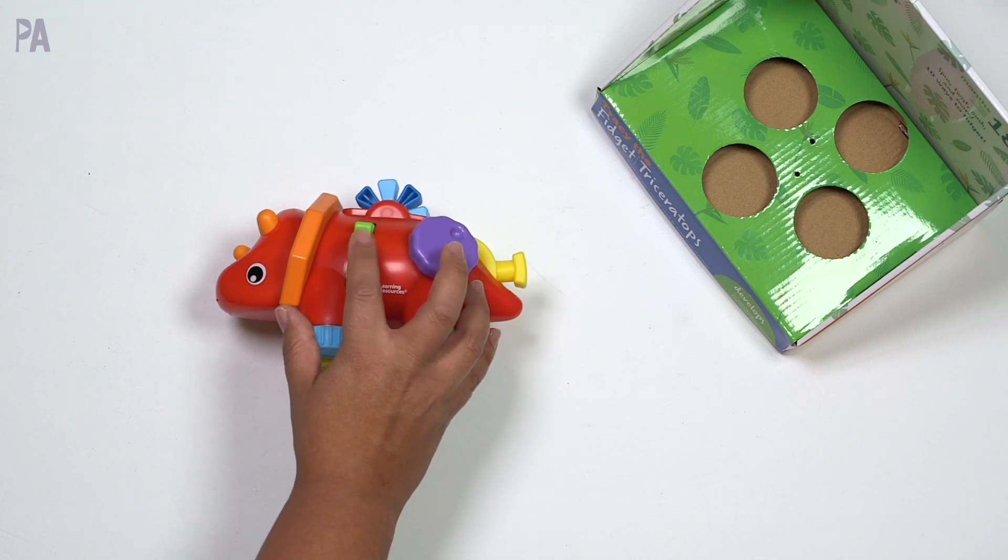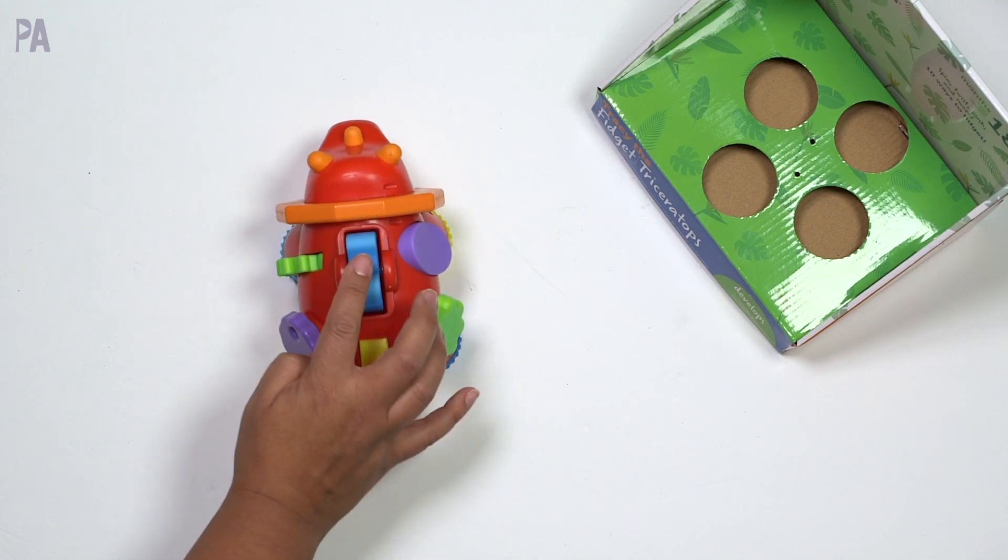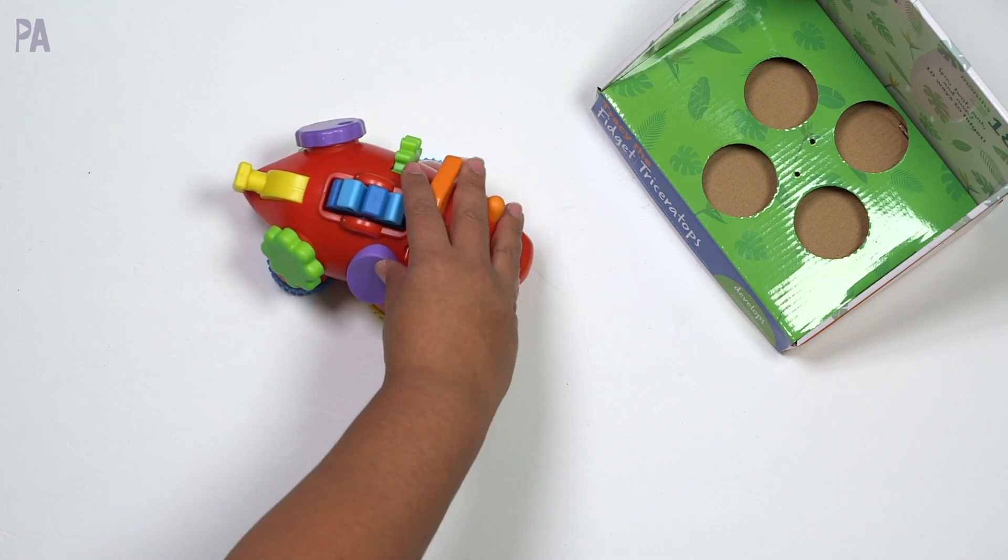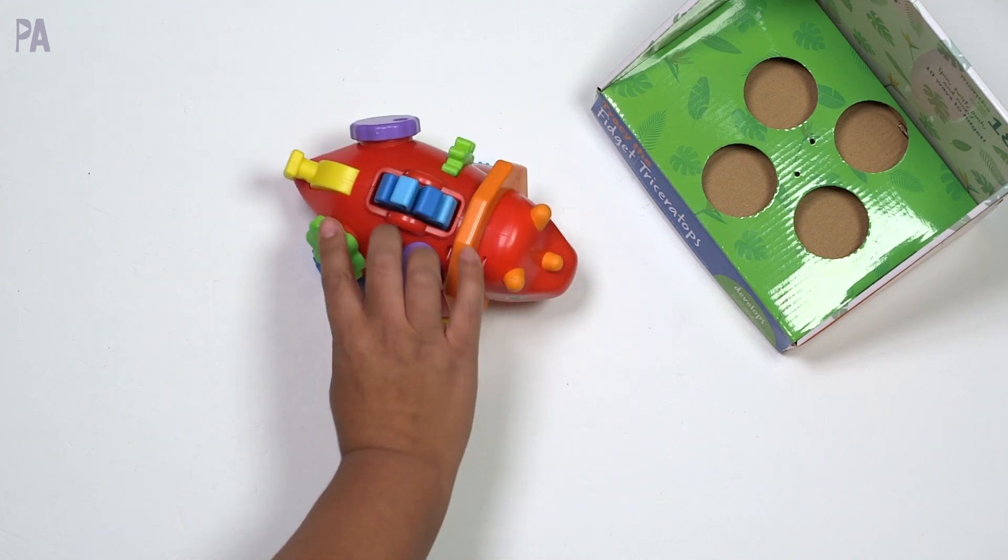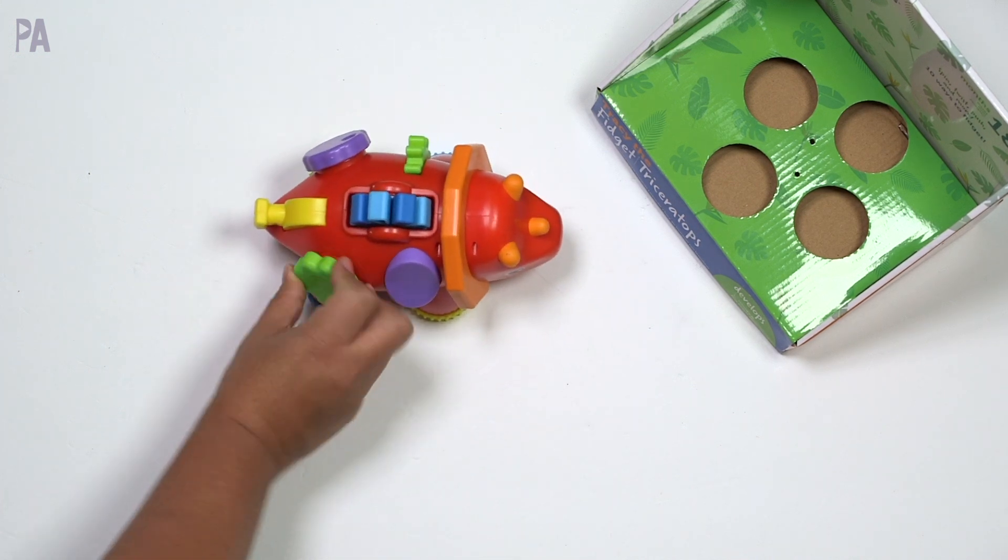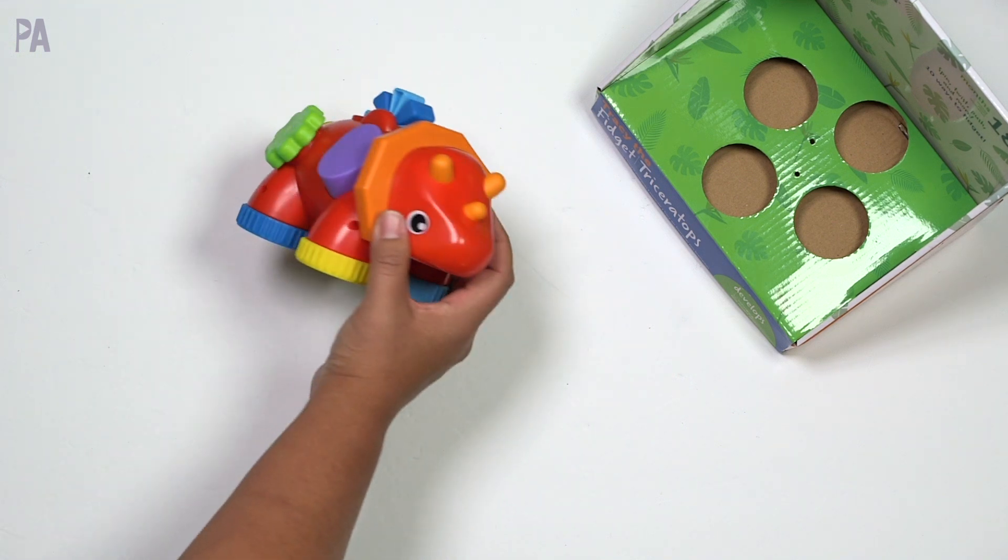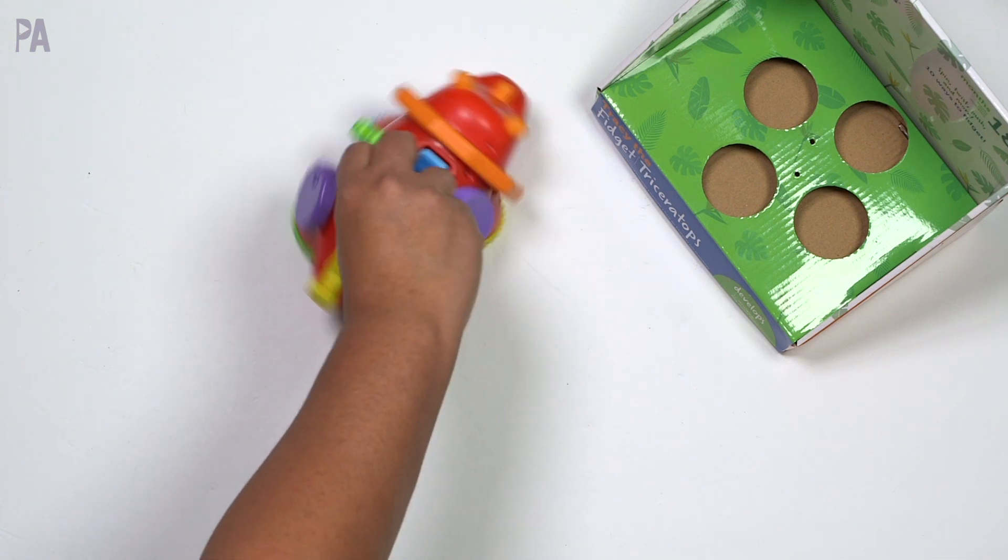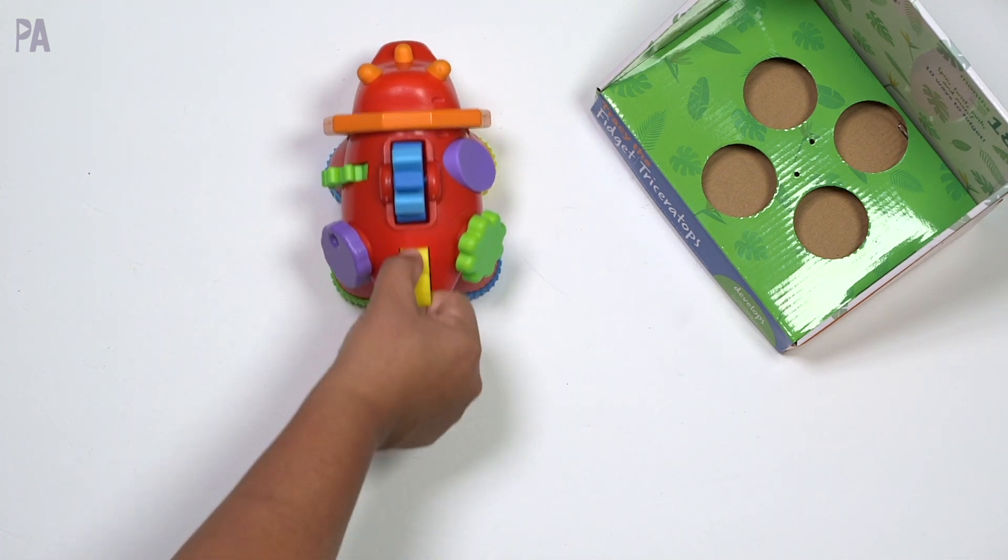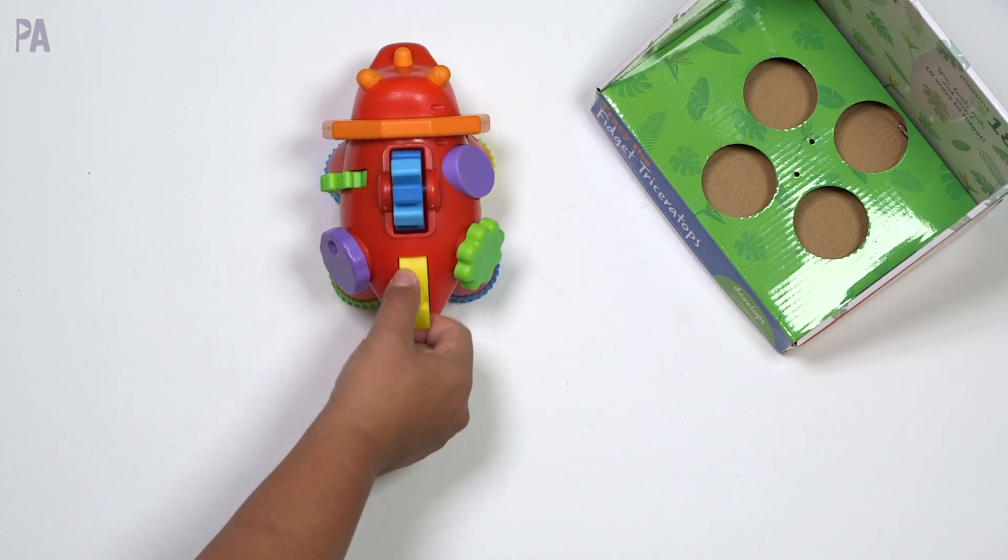We have this right here that spins. On the top there is another blue spinner. This side has a purple button to push and we have another green knob that makes a noise and that makes for 10 different fidgets. Oh in the back too on the very back right above the tail we have a little lever to push up and down.